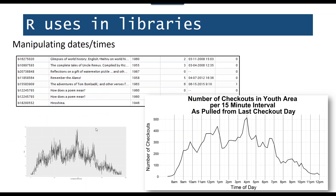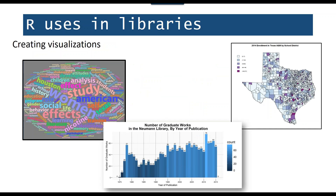You can also use R to manipulate dates and times. Here we took the last checkout date for all books in the youth library. We pulled out only the last date each item was checked out, under the assumption that when someone checked it out they were in the library. On the left the data was too sloppy to tell anything, so we rounded it up to the nearest 15-minute interval. We were able to see that — since we have three-hour class periods at UHCL — before each class period begins (before 10 a.m., 1 p.m., 4 p.m., and 7 p.m.) there's a spike in usage. You can use that to make staffing decisions. R can also create all kinds of visualizations from word clouds to bar plots to line plots, and you can even do GIS in R.